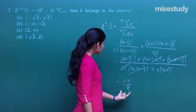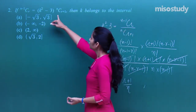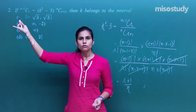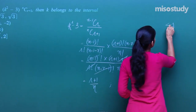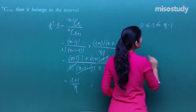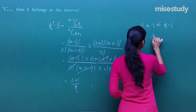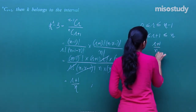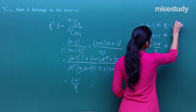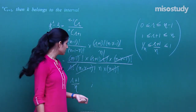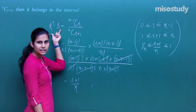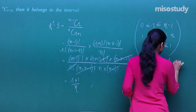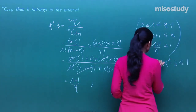So k²-3 equals (r+1)/n. Now r ranges from 0 to n-1, so r+1 ranges from 1 to n, and therefore (r+1)/n ranges from 1/n to 1. This gives us the range for k²-3: it is greater than or equal to 1/n and less than or equal to 1.